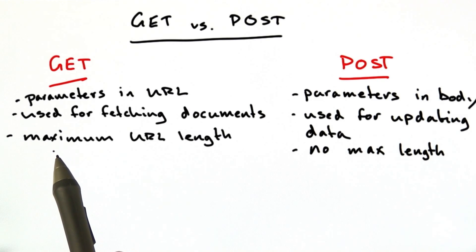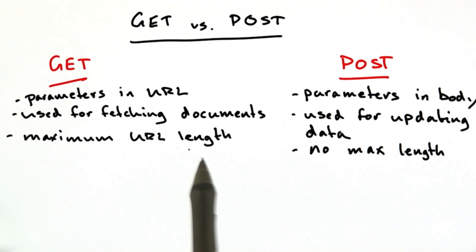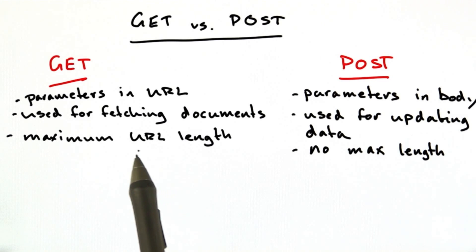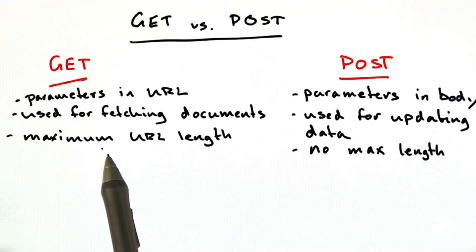Another difference is that GET parameters, because they are in the URL, have a maximum URL length, or they're affected by the maximum URL length, because you can only encode so many parameters. For example, I think Internet Explorer allows 2,000 characters in the URL or something like that, which can be quite limiting.